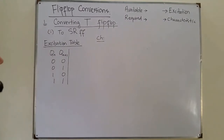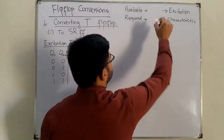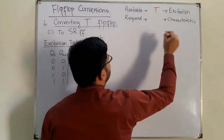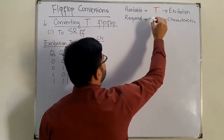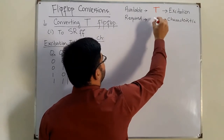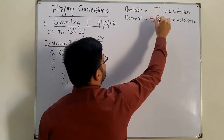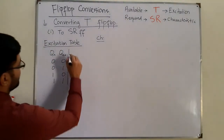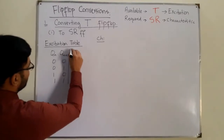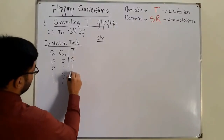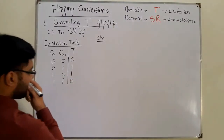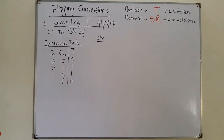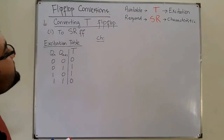In this case, the available flip-flop is the T flip-flop and the required flip-flop is the SR flip-flop. For the T flip-flop, you have to draw the excitation table. The excitation table for T is: 0, 1, 1, 0.